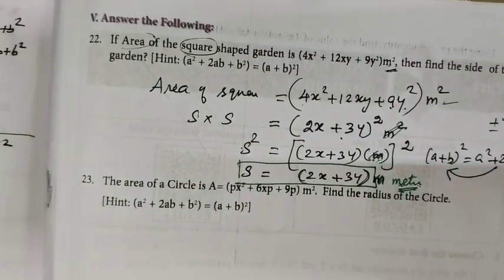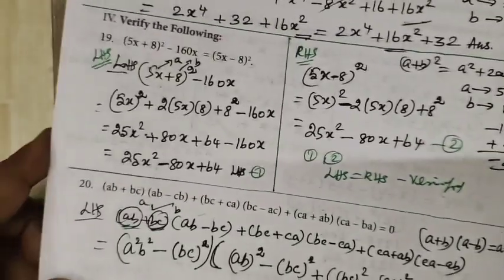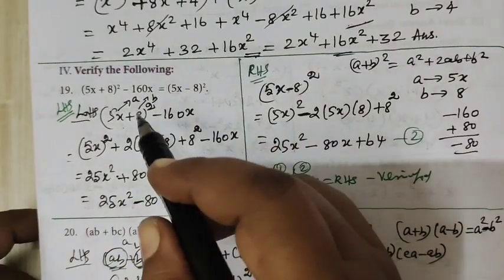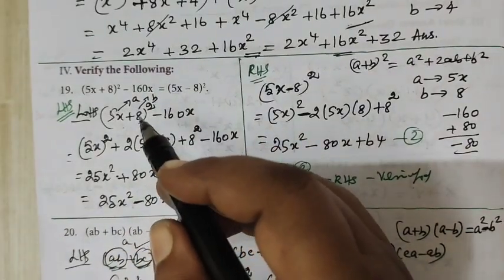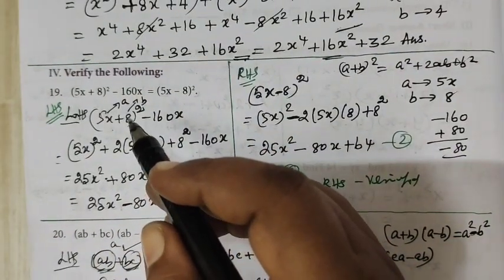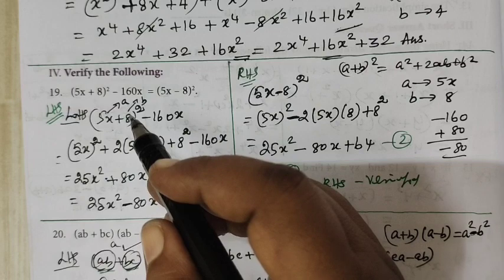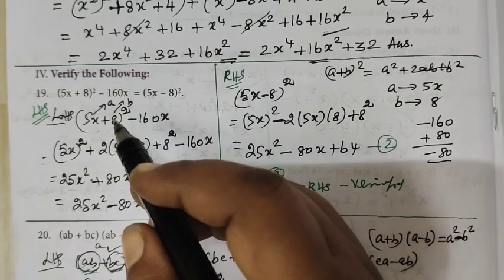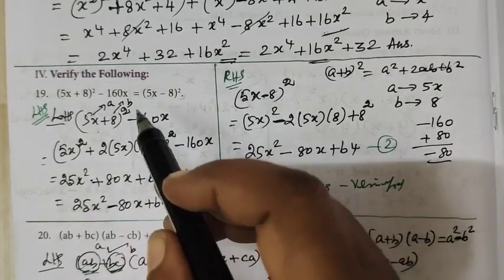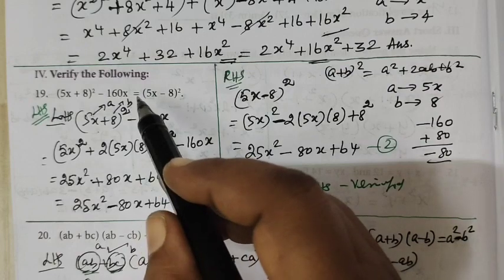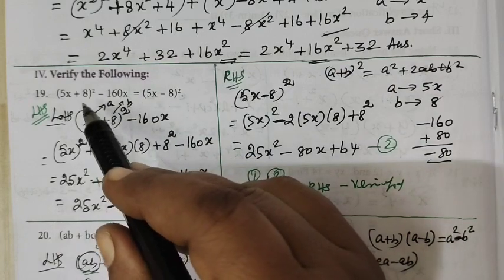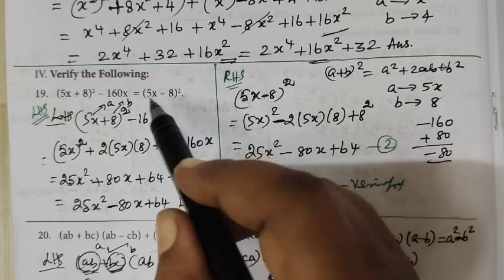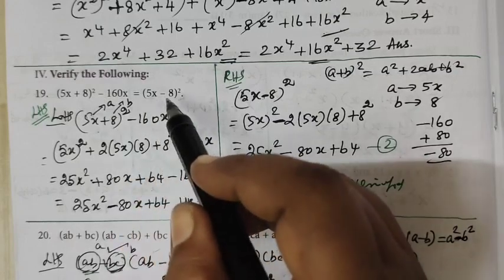Question number Roman Letter 4, Question number 19. This video was already uploaded but it was very lengthy, so it is deleted. Verify the following Question number 19: (5x + 8) whole square minus this one equals — LHS and RHS are equal.